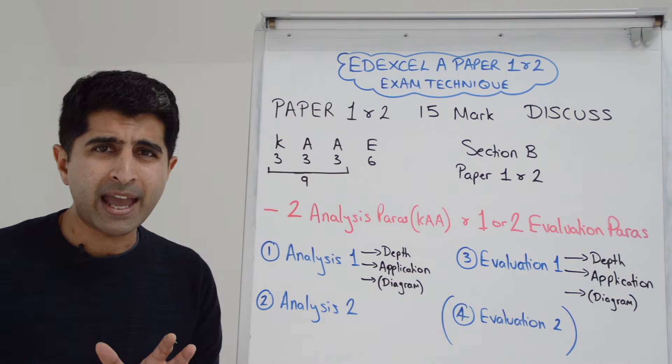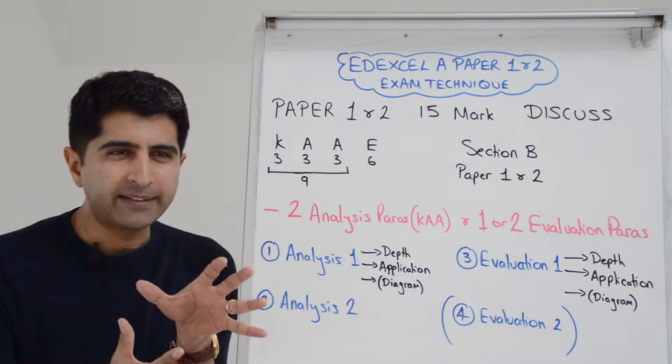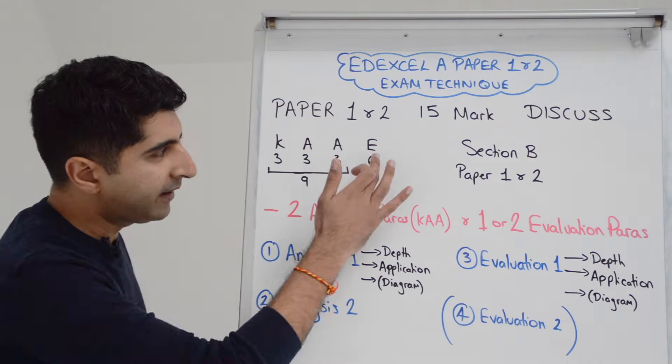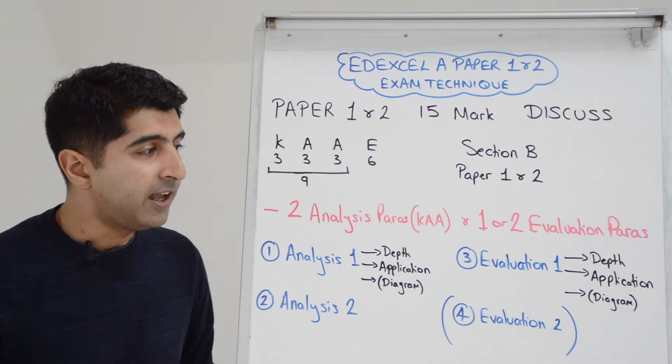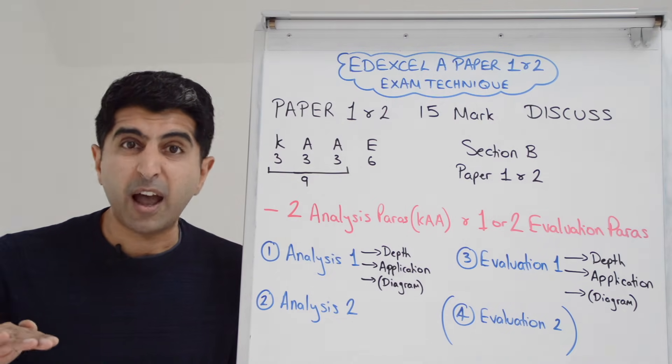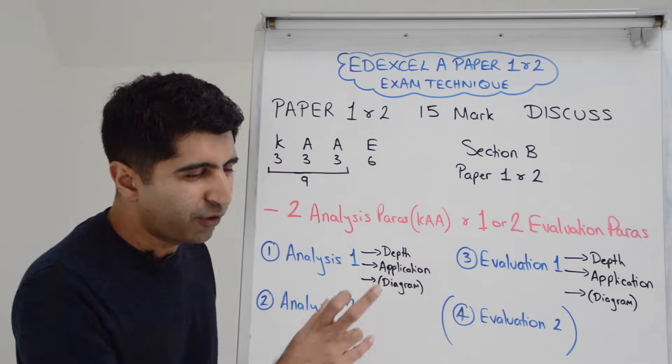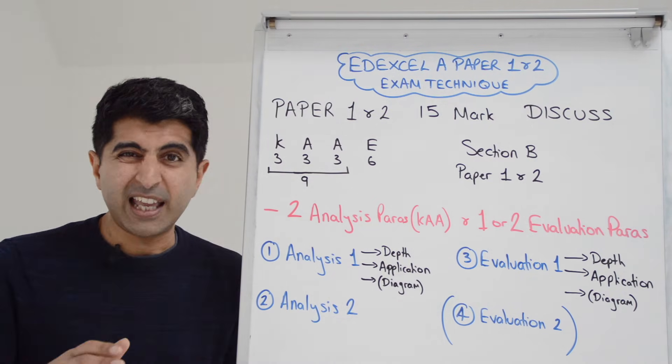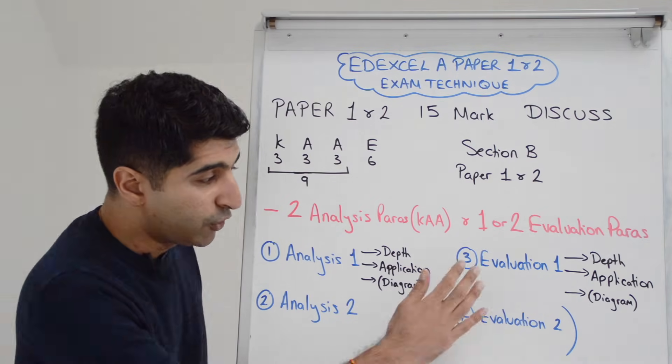And then you're thinking by the end, is that lots of detail? Is that likely to get me a high level? Is that likely to get me five or six here? In which case, stop there. You're probably out of time anyway with your 15 minutes. But if you're thinking it's very short, this isn't going to get me six marks, there's not enough detail, you can write a second one.